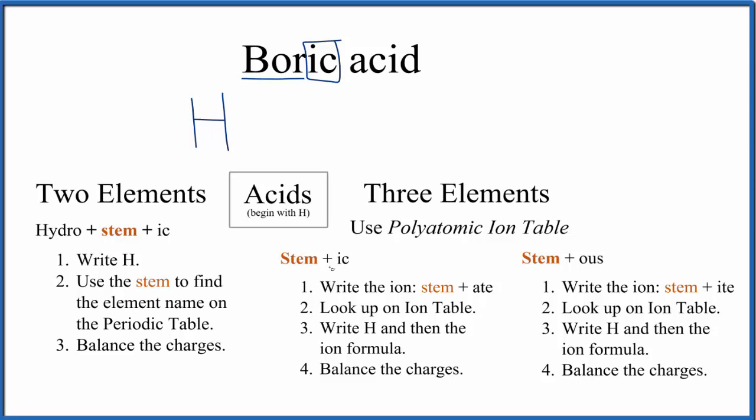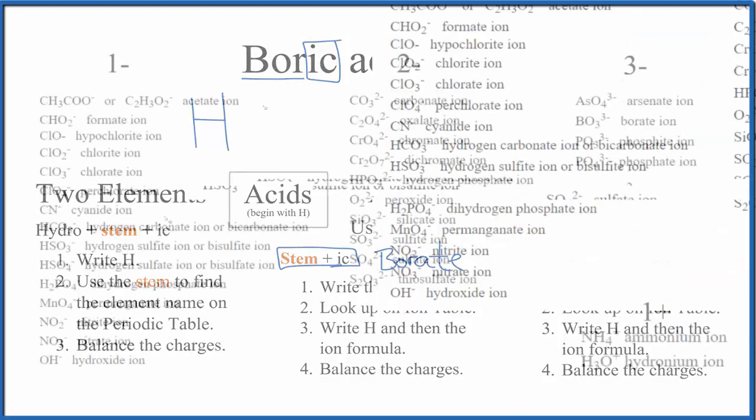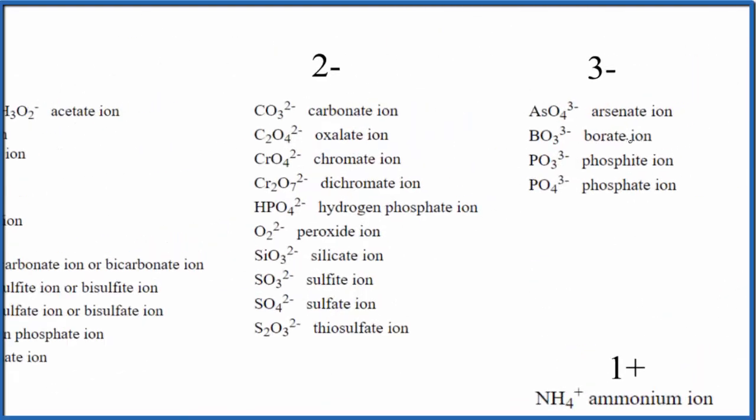Since we have the stem 'bor' with 'ic' after it, we use this set of rules: we write the stem 'bor' and add '-ate' on the end to get 'borate'. So we can look that up on a table of ions to figure out the formula for the borate ion.